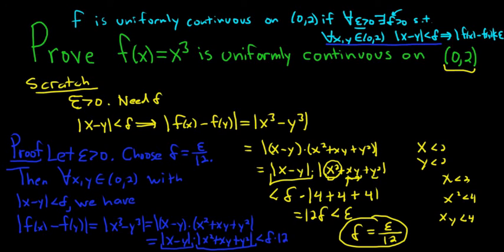And delta is equal to epsilon over 12. So this is equal to epsilon over 12 times 12. Boom! And we get epsilon. Wow!